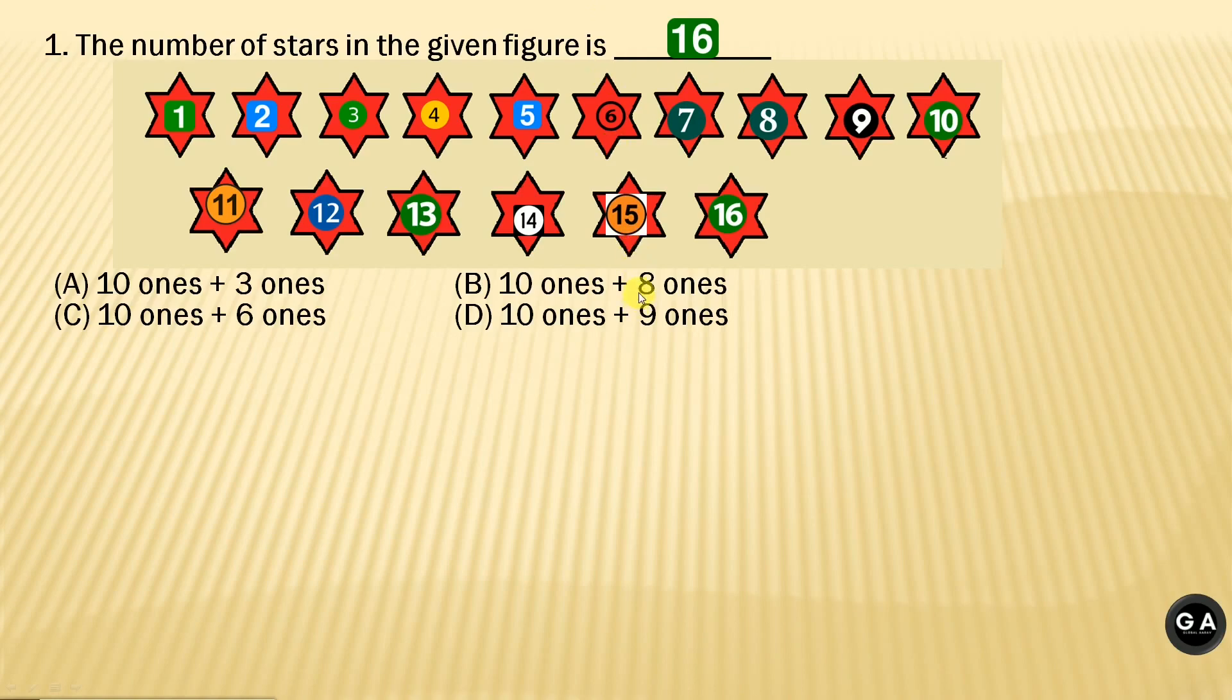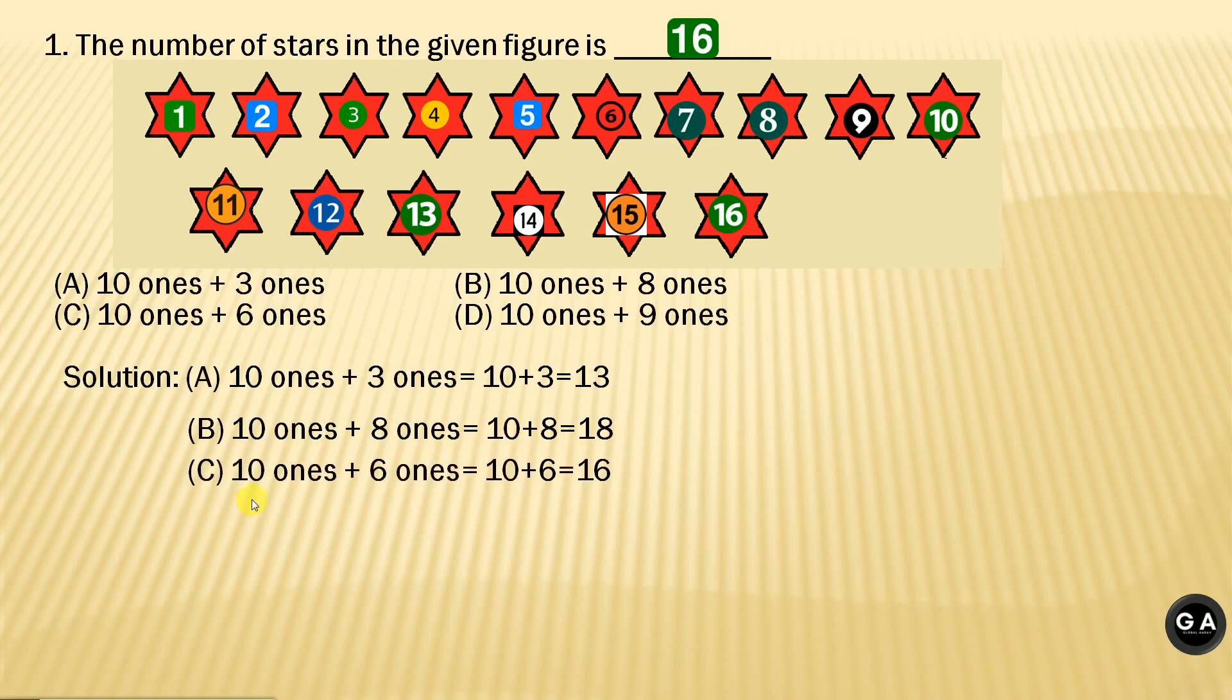Now, let's check the options. Solution: first, option A, 10 ones plus 3 ones equals 10 plus 3 equals 13. Option B, 10 ones plus 8 ones equals 10 plus 8 equals 18. Option C, 10 ones plus 6 ones equals 10 plus 6 equals 16. And option D, 10 ones plus 9 ones equals 10 plus 9 equals 19. So, the correct answer is option C.